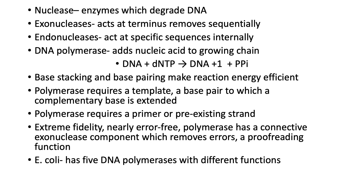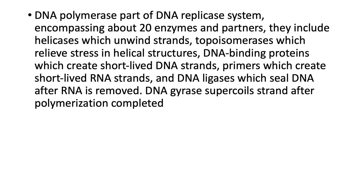E. coli, as an example, has five DNA polymerases with different functions. The DNA polymerase is part of the DNA replication system, which encompasses about 20 enzymes and partners. They include helicases which unwind the strands, topoisomerases which relieve stress in helical structures, DNA binding proteins which cause short-lived DNA strands, primers which create short-lived RNA strands, and DNA ligases which seal the DNA after RNA is removed. DNA gyrase supercoils strands after polymerization is completed.